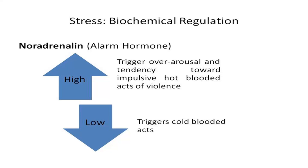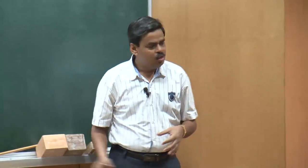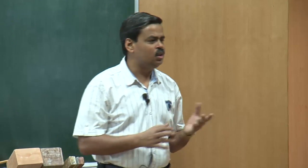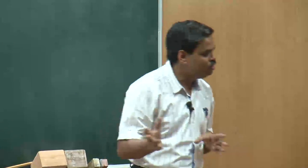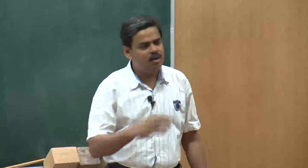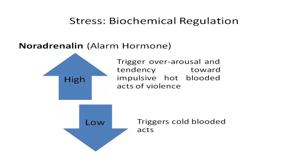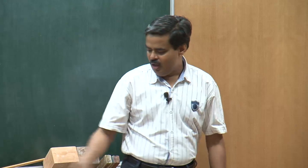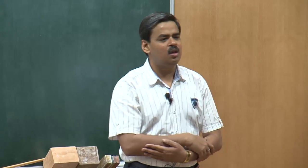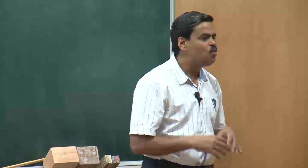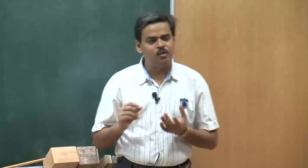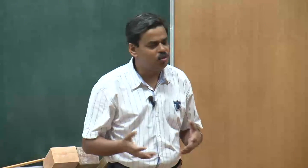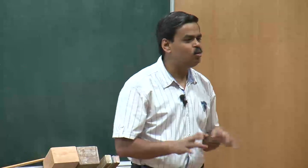Similarly, in the case of noradrenaline — also called the alarm hormone — we consider both hyper and hypo states. If you have a hypersecretion of noradrenaline, it triggers over-arousal and a tendency towards impulsive, hot-blooded acts of violence. The reverse happens with hyposecretion — lower levels of noradrenaline — where you have very cold-blooded acts. From psychological, social, and legal viewpoints, neither hot-blooded nor cold-blooded acts of violence are acceptable.